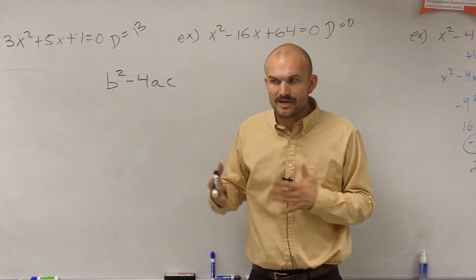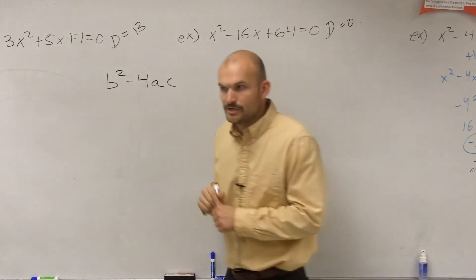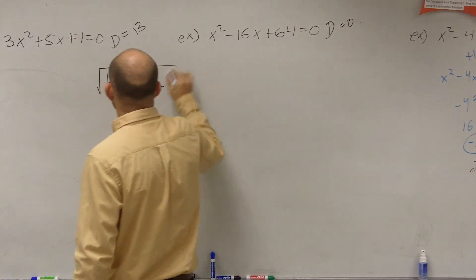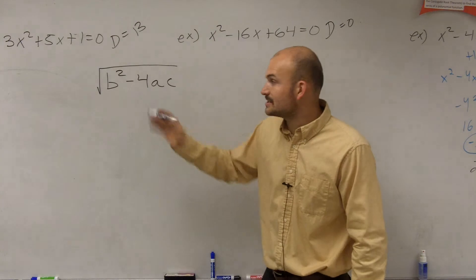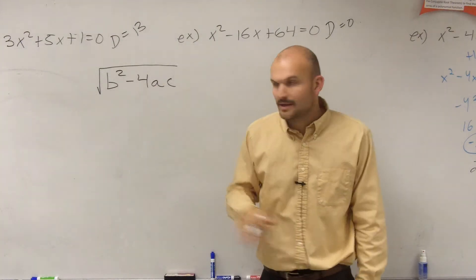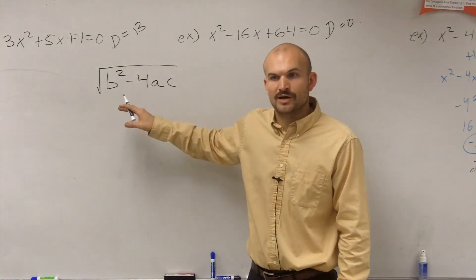Remember, we call this a discriminant. The discriminant is what you take the square root of. That's why we call it a discriminant, because in the formula we're going to learn, this is the value we're taking the square root of.